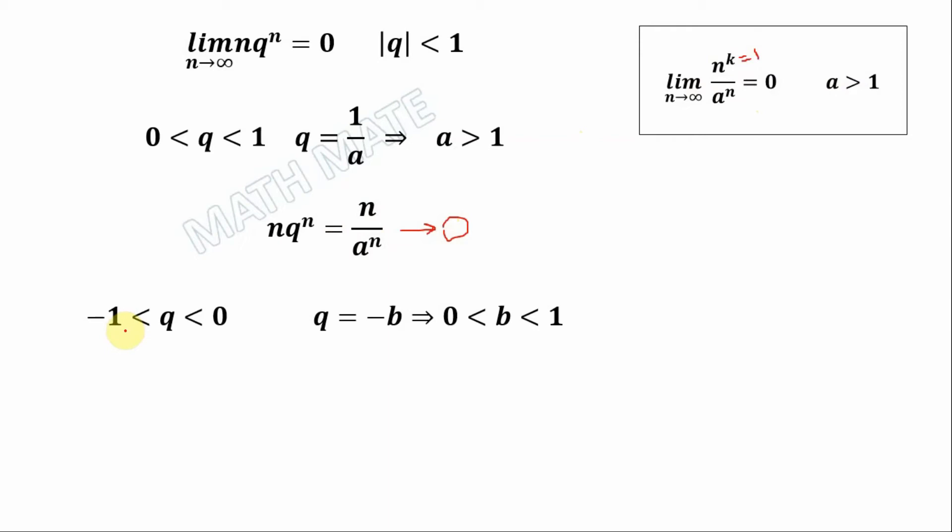second case when q is between negative 1 and 0. Let's define q as minus b, and it follows that b is between 0 and 1. So our multiplication equals negative 1 to the power of n multiplied